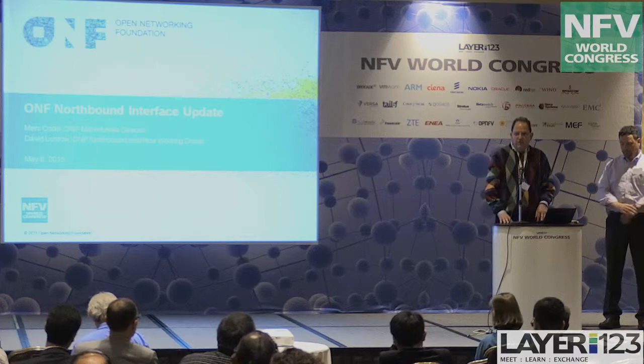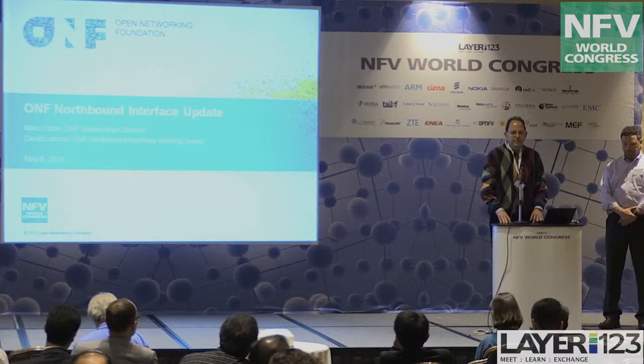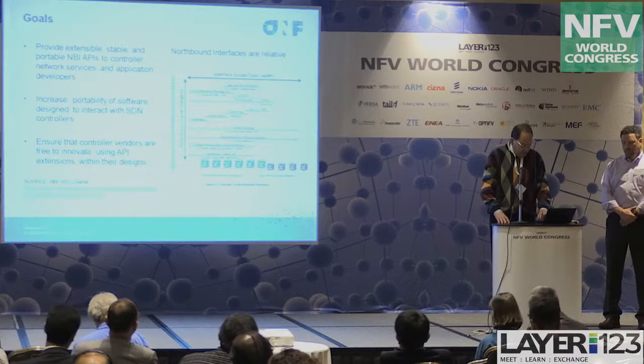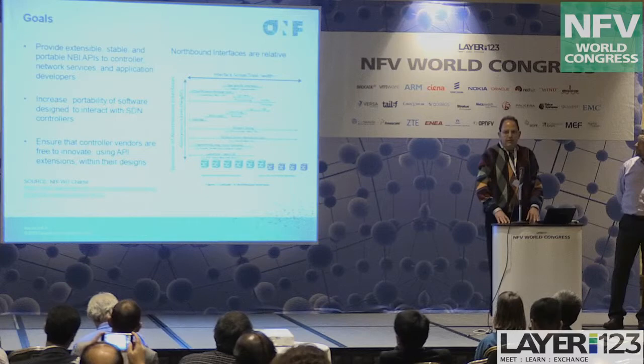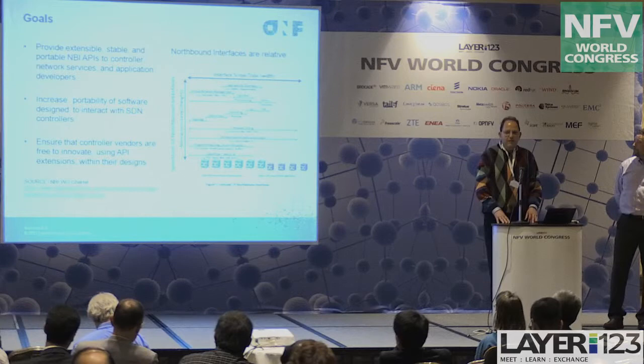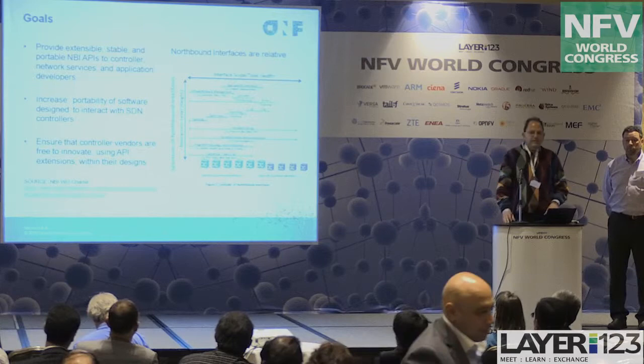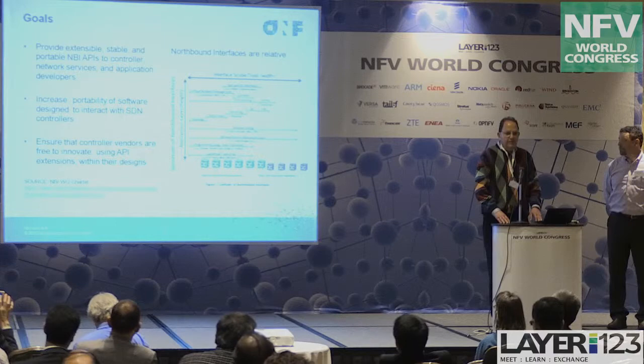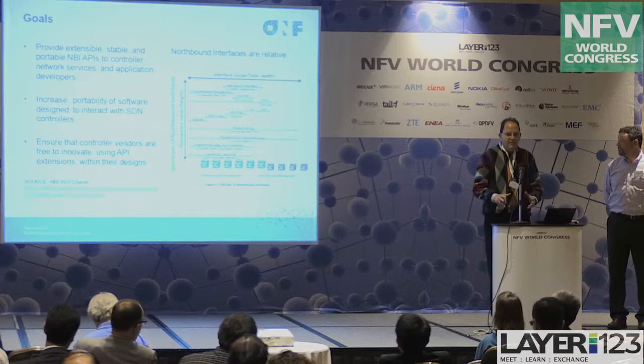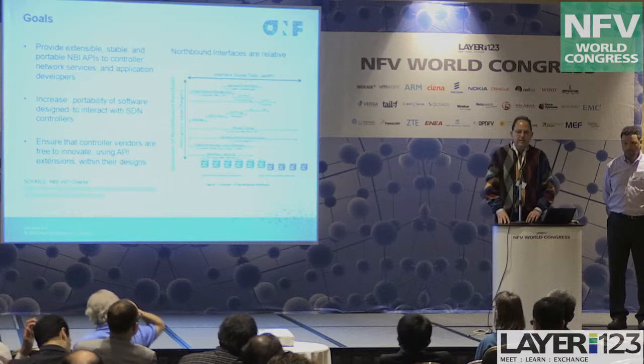What we want to do today is talk about an extremely important area that has implications not just for SDN but for NFV as well, and that is the northbound interface. The chart on the right indicates the challenge with the northbound — what is northbound and how far north is north. When we actually started this effort a couple of years ago, one of the biggest challenges was to try to come up with a model so that we could address the problem and create a problem statement we could actually solve.